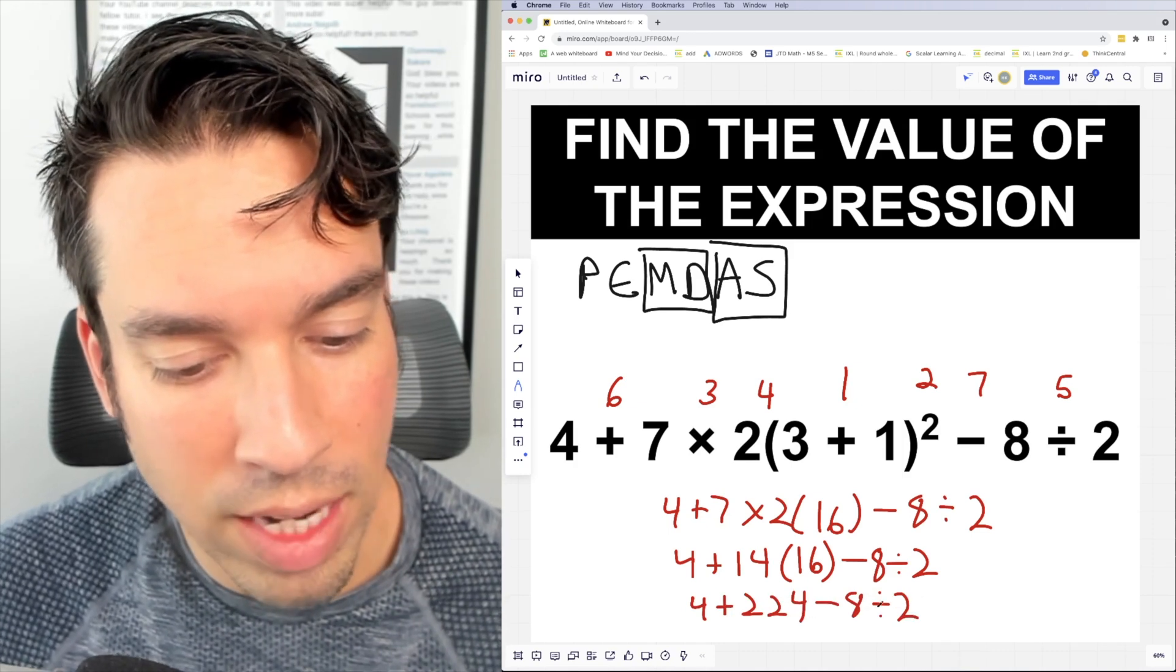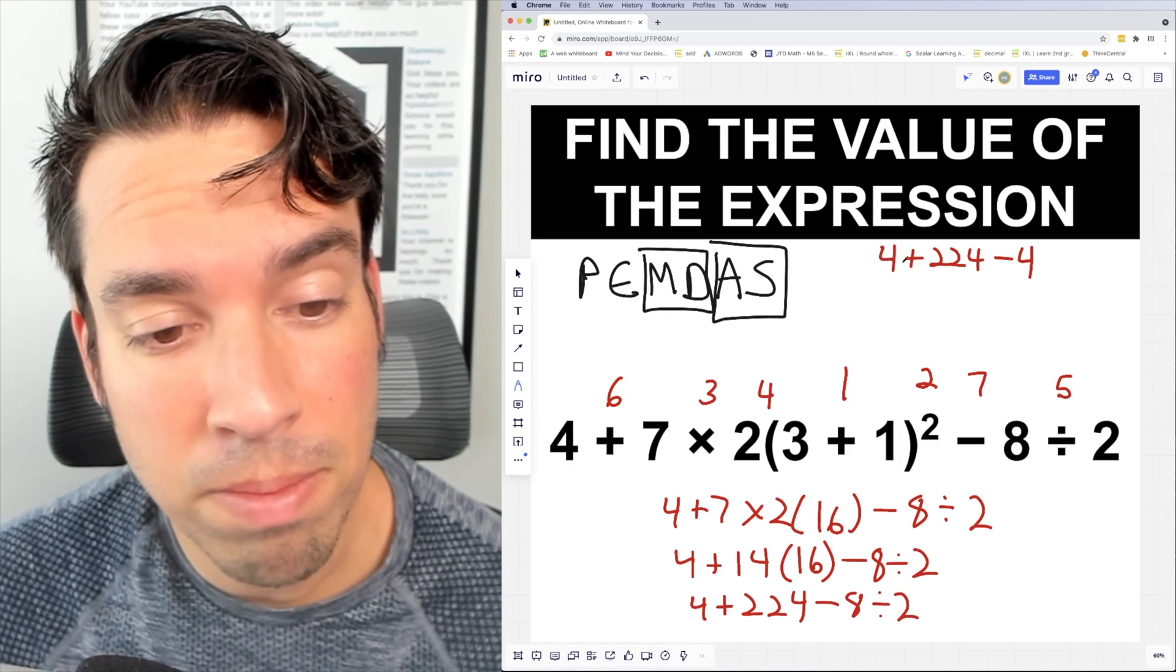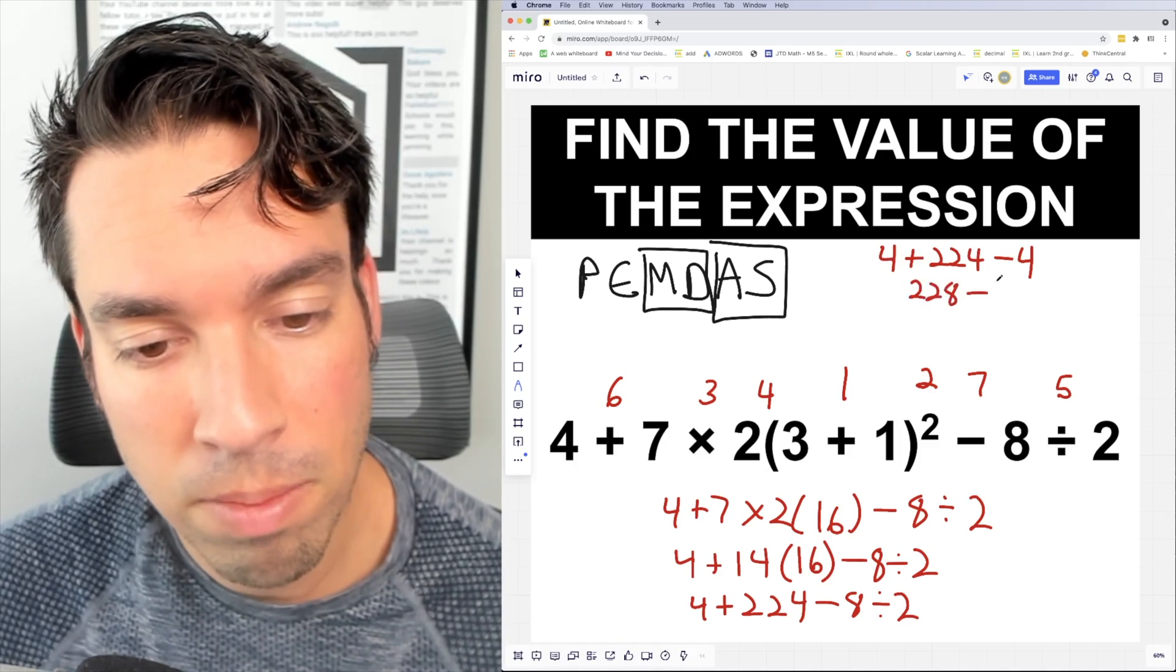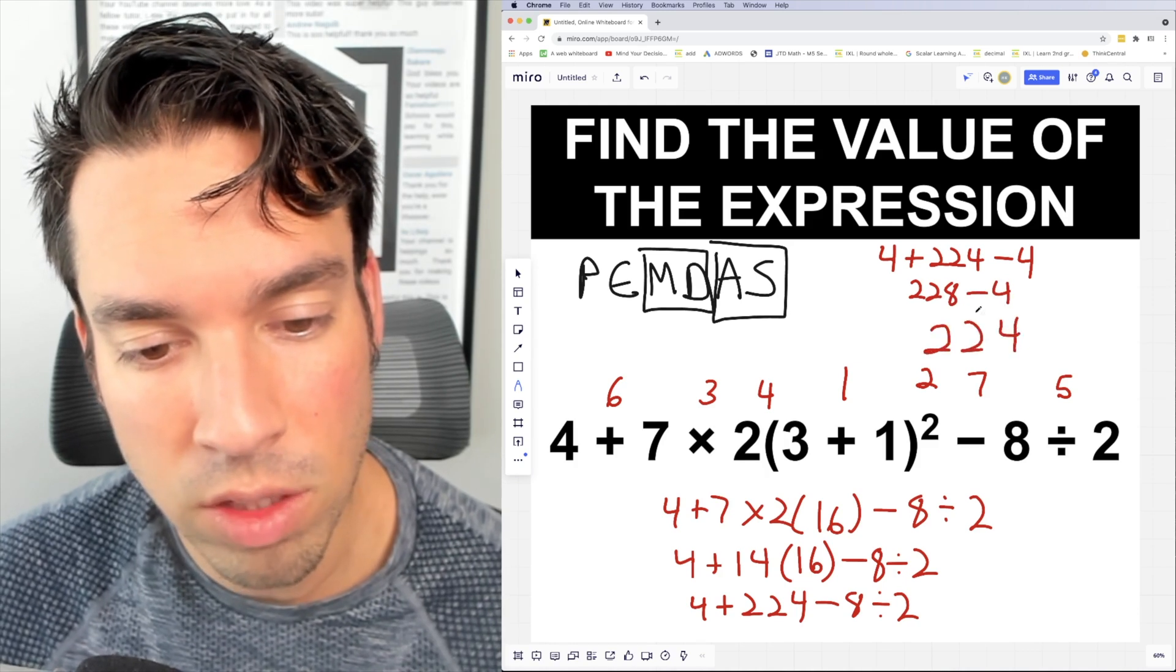Now I'm going to move it up top. And then we're going to do eight divided by two, which of course is four. Now we just go left to right plus and minus. So four plus 224 is 228 minus four for the win is 224.